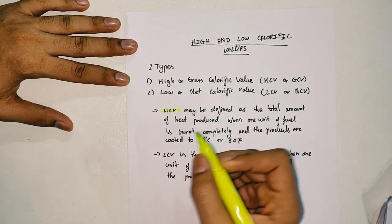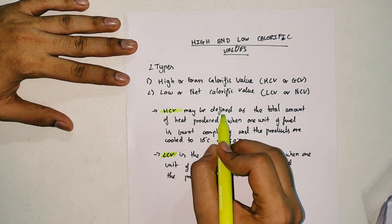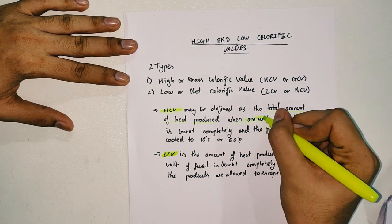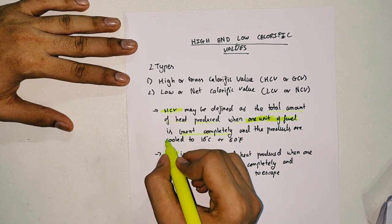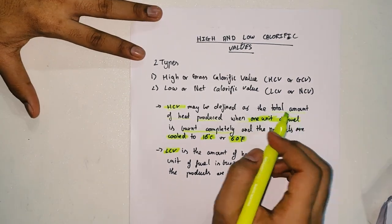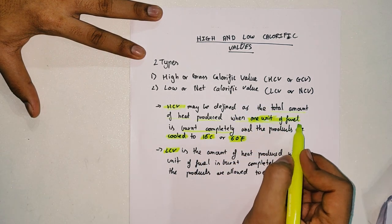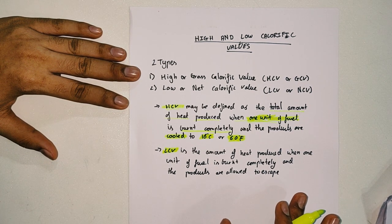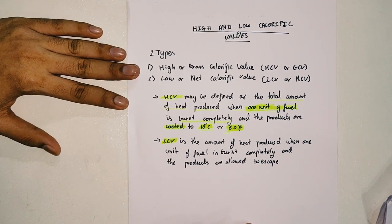HCV may be defined as the total amount of heat produced when one unit of fuel is burned completely and the products are allowed to cool to 16 degrees Celsius or 60 degrees Fahrenheit.